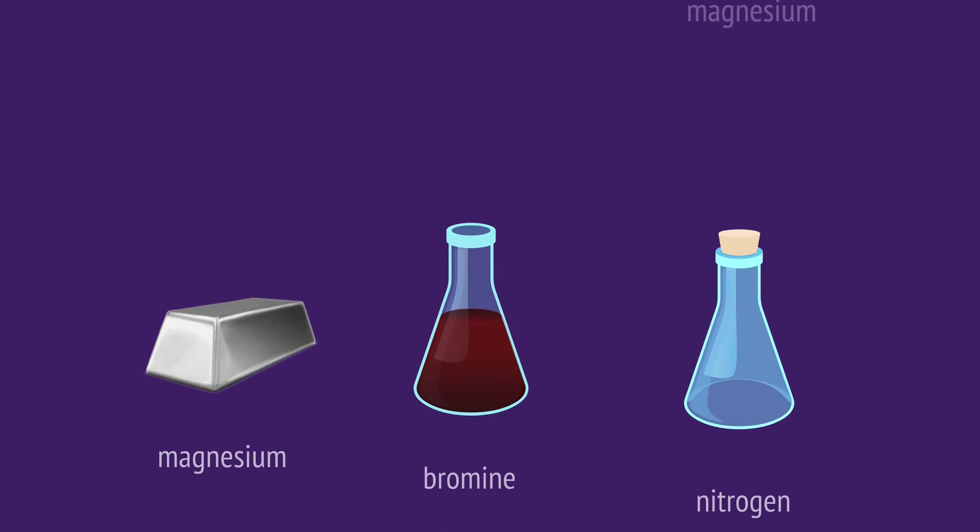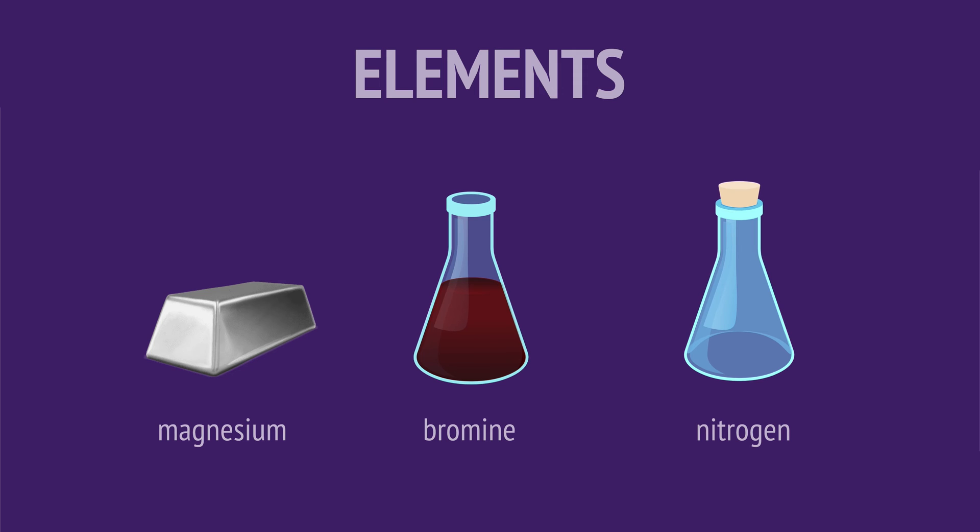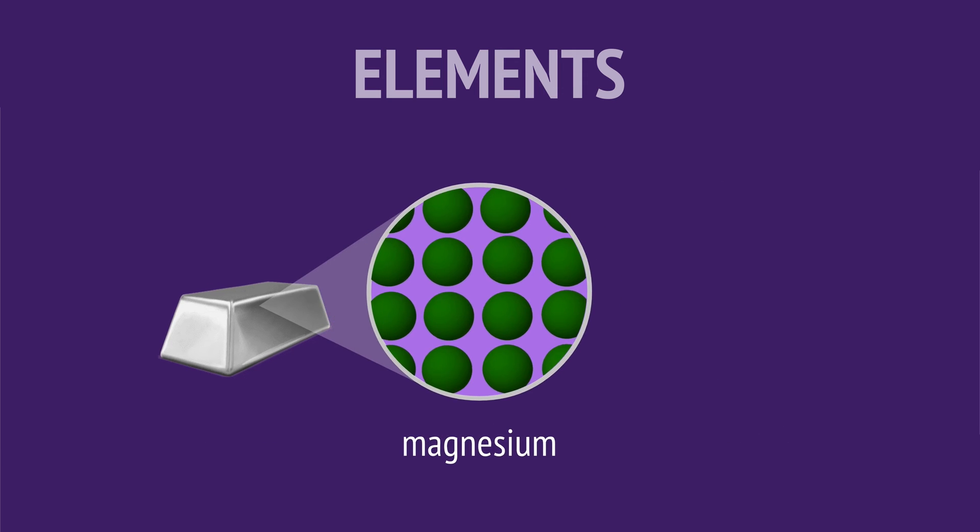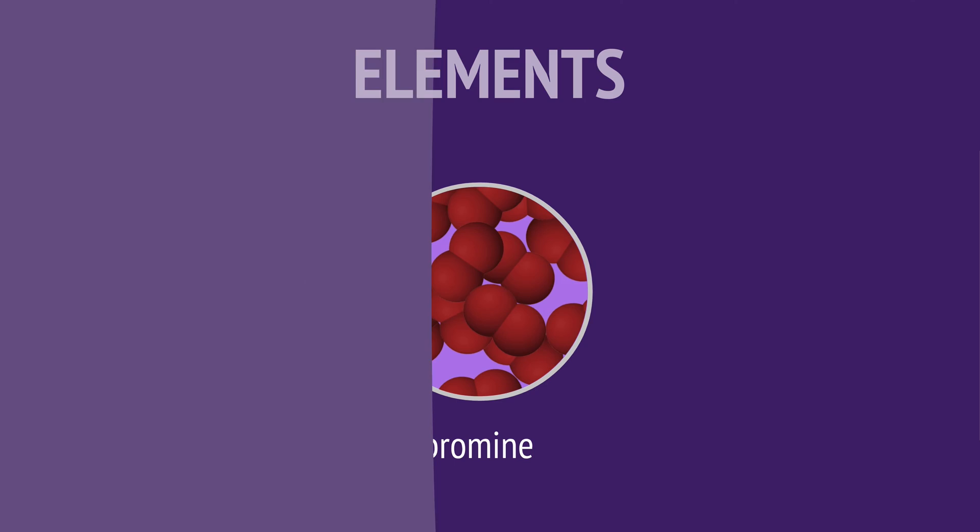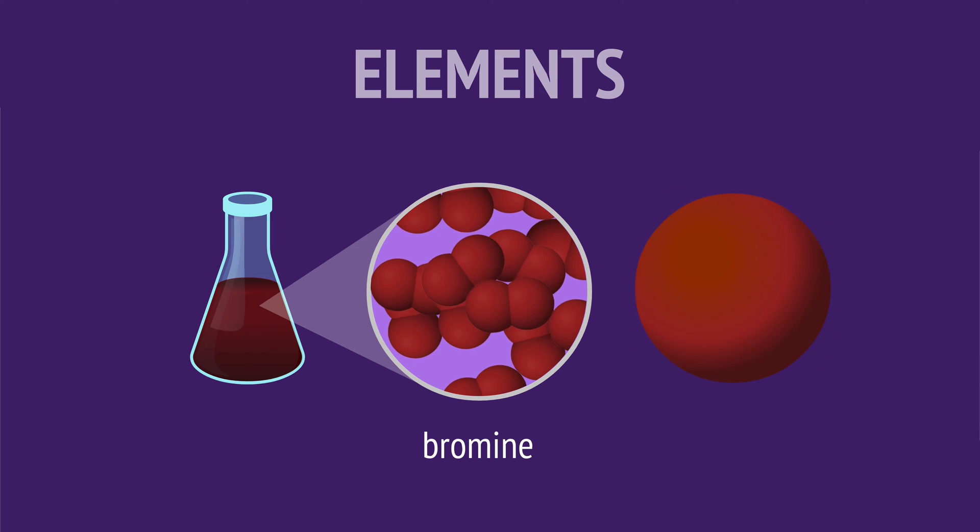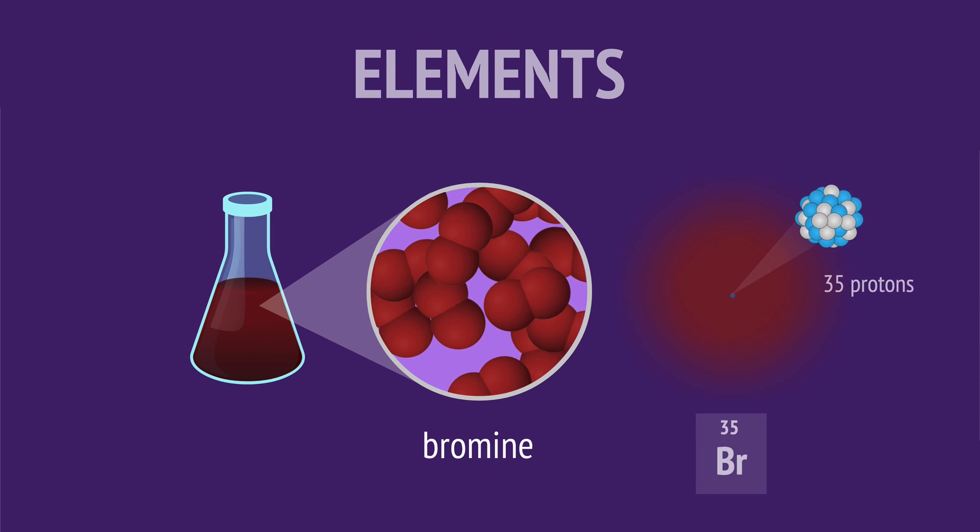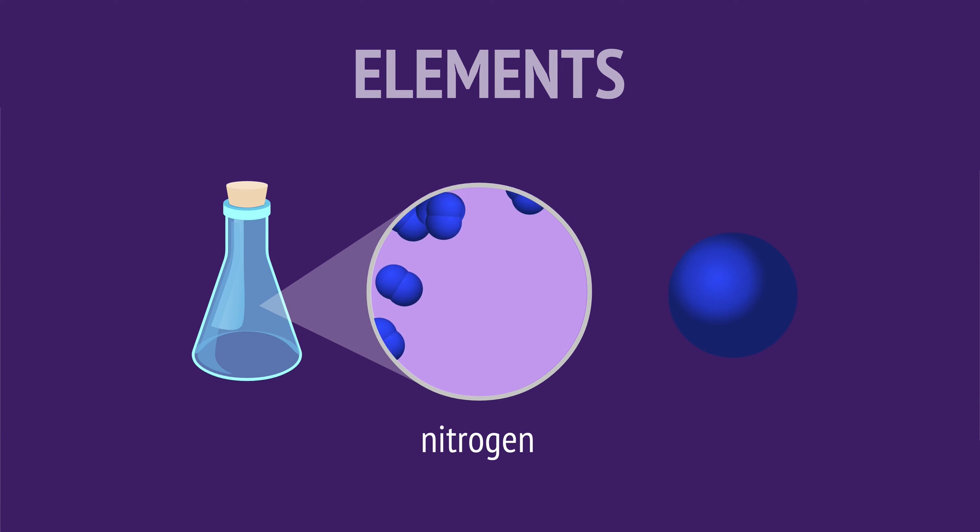A chemical element is a substance made entirely from one type of atom. So the element magnesium has only magnesium atoms with 12 protons. The element bromine has only bromine atoms with 35 protons, and the element nitrogen has only nitrogen atoms with 7 protons.